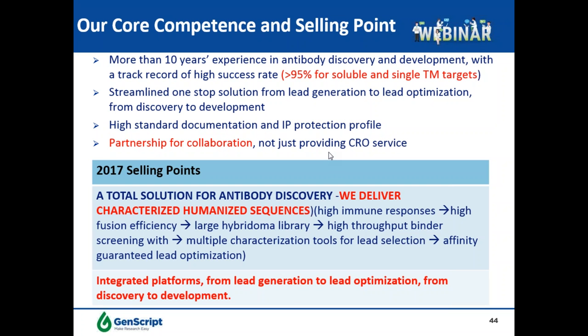The next question is about DNA immunization success rate. For single transmembrane targets such as immune checkpoint proteins, our success rate of DNA immunization is over 95%. For multiple transmembrane targets such as GPCRs and ion channels, due to the extreme complexity of those targets, our success rate of DNA immunization is about 50%, but that is still high in the field and we are currently working to improve this success rate.